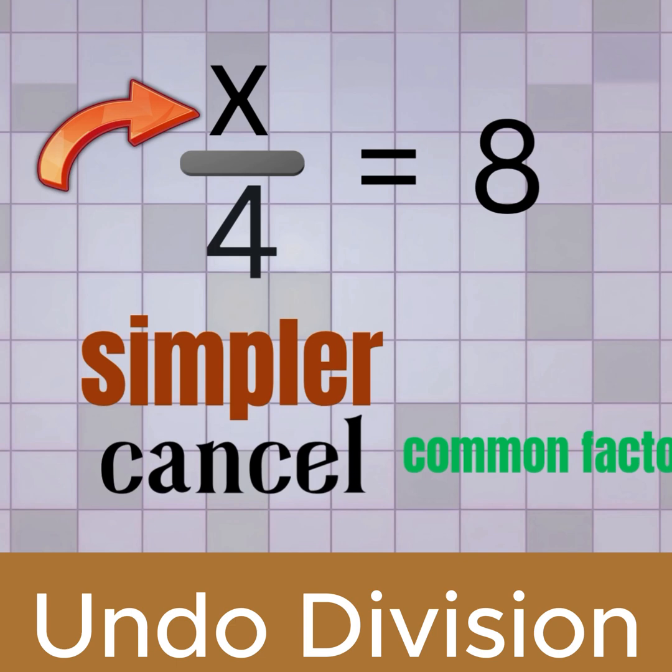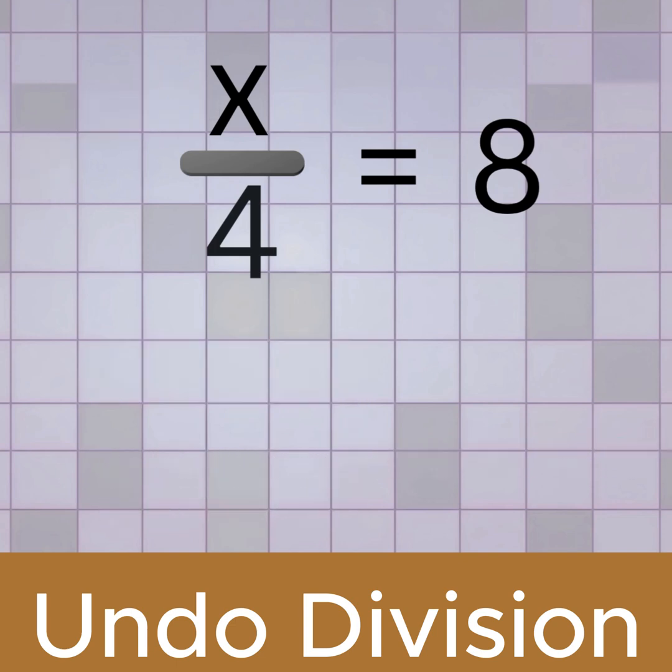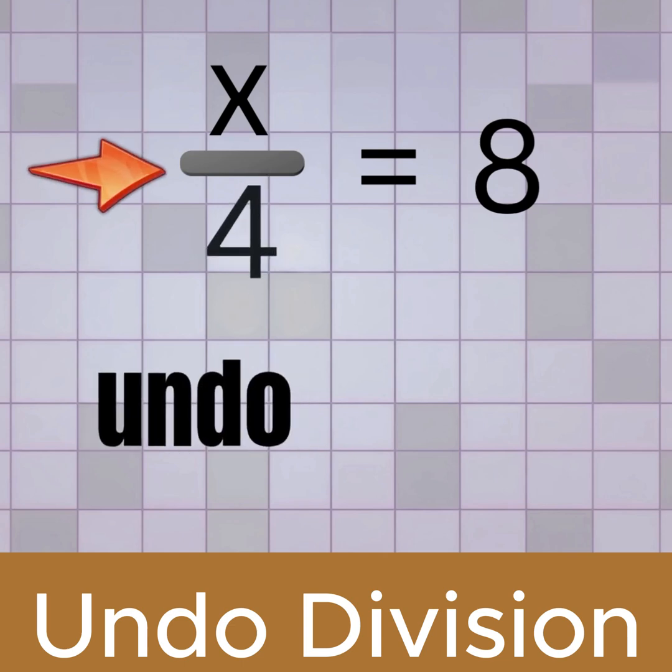Now that it's rewritten, let's solve it. We can see that the variable is not by itself, because it's being divided by 4. How can we undo that division? Yep, we undo division with multiplication.